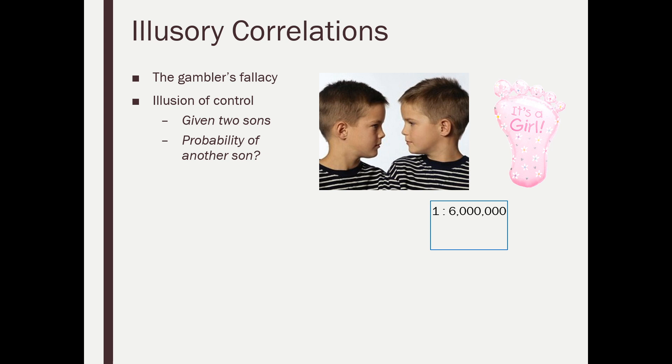And he came to the conclusion that the probability was one in six million, that given that he already had two sons, that he would have another son. Now you guys are sitting there not being advanced statistics teachers. Is that the correct calculation that he did? Is that how he should have figured that out?